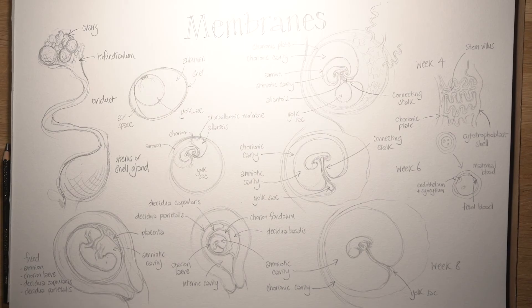And that placenta is going to grow and grow. By term, by the time the baby's born, it's around 20 centimeters in diameter and weighs about half a kilogram.